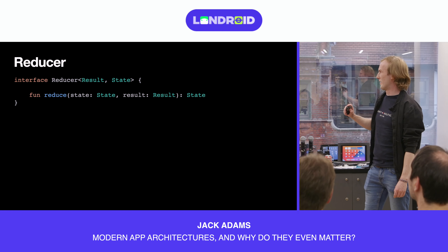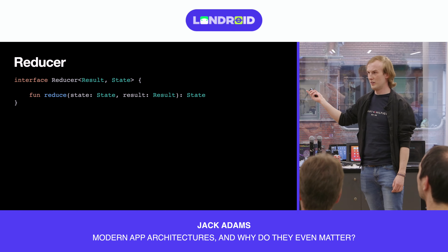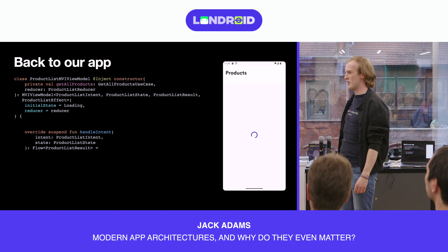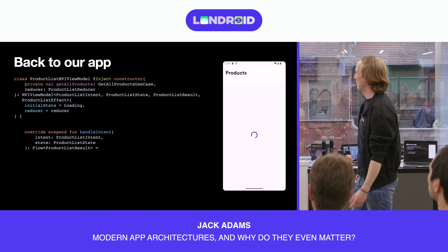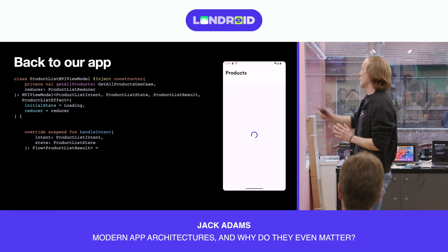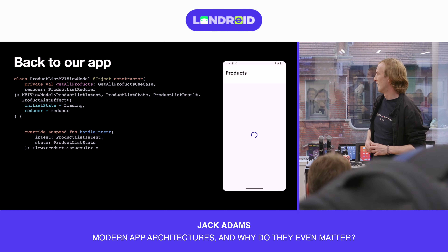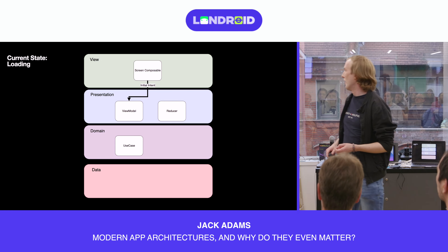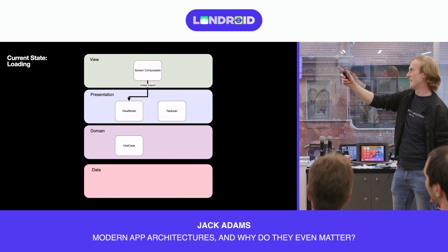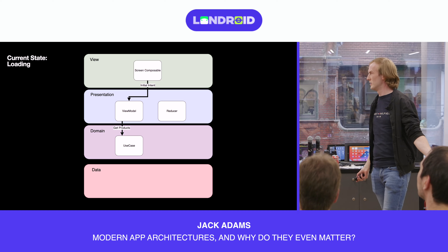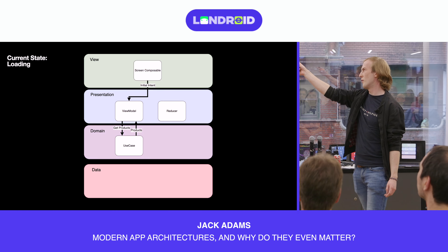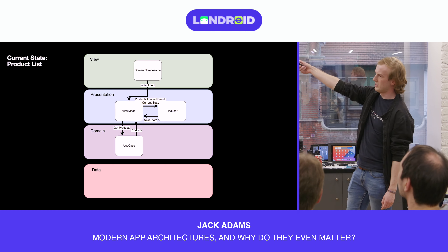We have a reducer that takes the current state and the result from the ViewModel and maps the new state. Our ViewModel declares it's inheriting from an MVI ViewModel base class — it's a complicated class but the base ViewModel puts everything together under the hood. We have one method, 'handle intent', and a sealed interface 'ProductListIntent' — that's really the contract of our ViewModel. When loading data, the screen sends the initial content intent to the ViewModel, the ViewModel tries to get the products, and sends the products-loaded result to the reducer along with the current state, receiving back the new state.